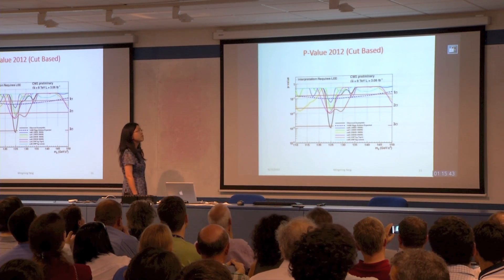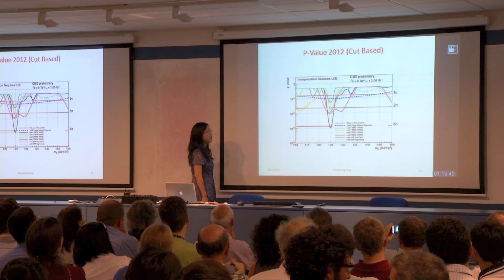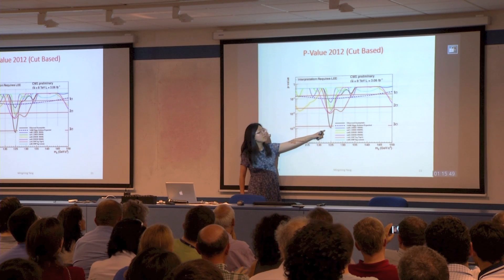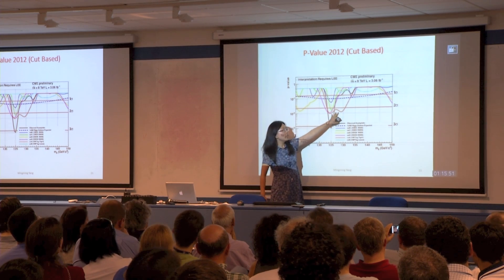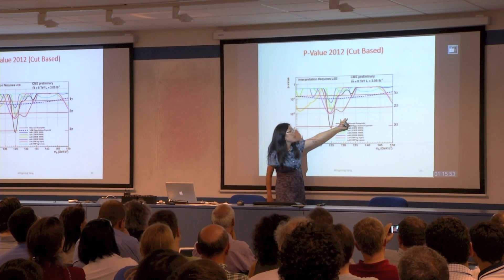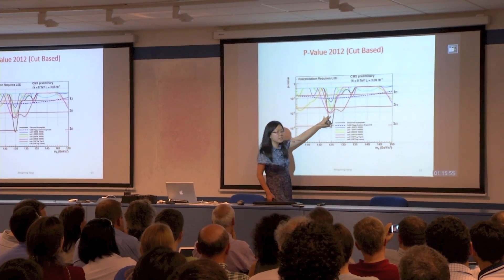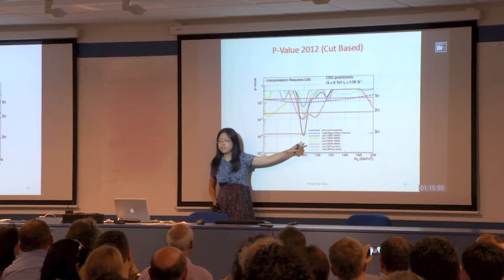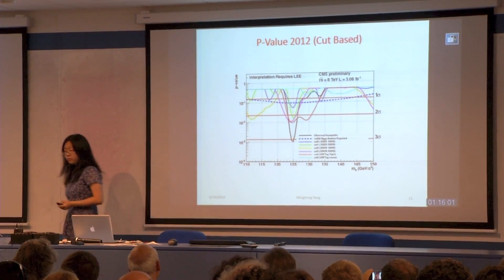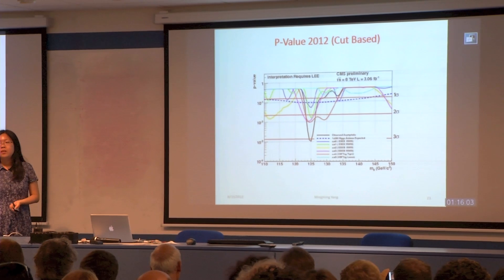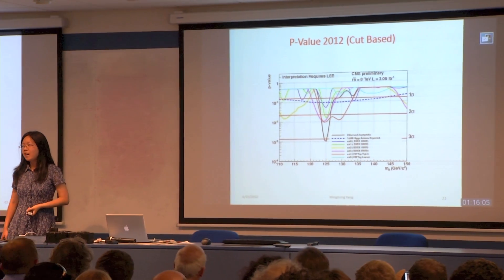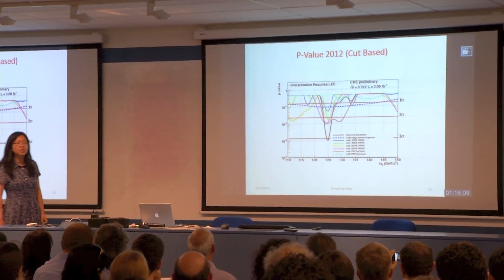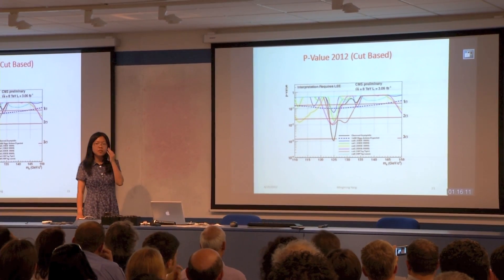So this is the significance of the 2012. The black is the combined significance. The red is for the type digest category, and the rest, which are very difficult to see by eye, is for different categories. And the next slide shows the combined result of the 2011 and the 2012.